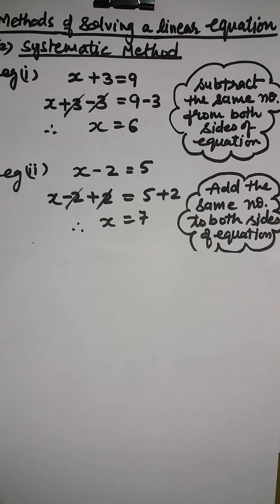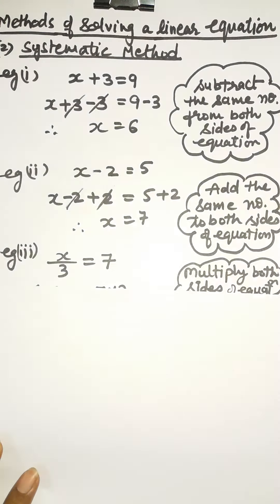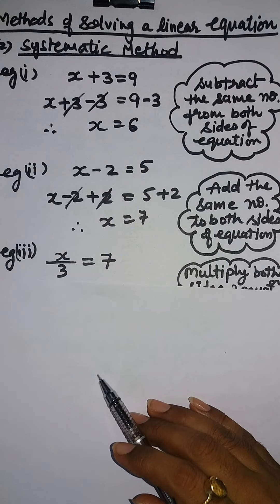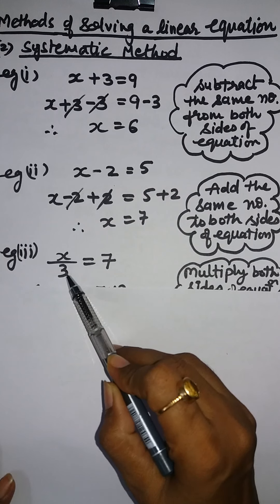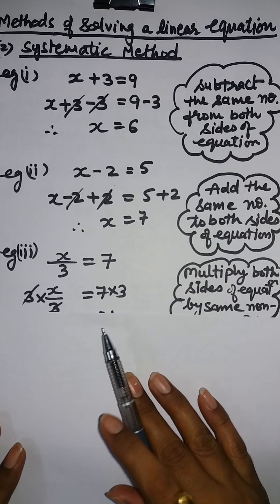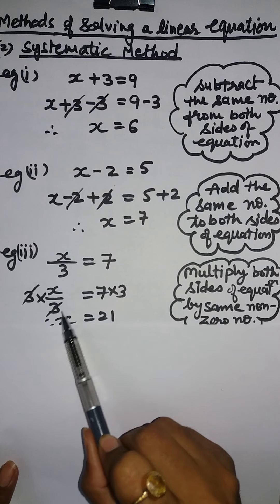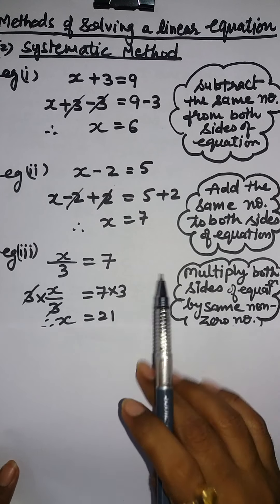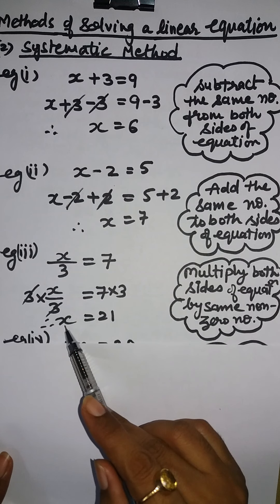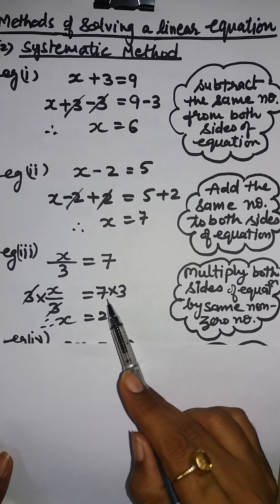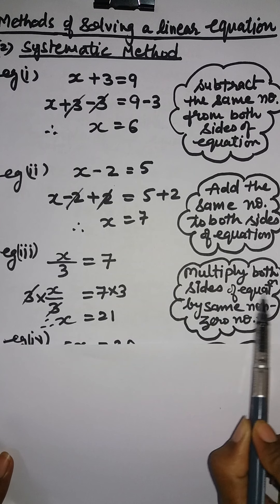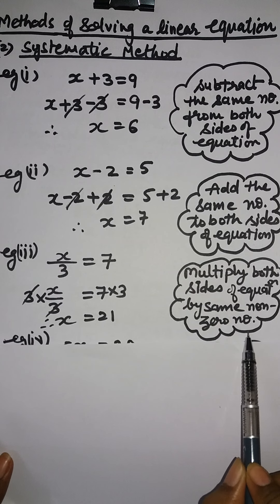Let us take one more example: x by 3 equals 7. To find the value of x, we multiply both sides by 3. After solving, we get x equals 21. This means: multiply both sides of the equation by the same non-zero number.